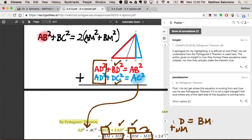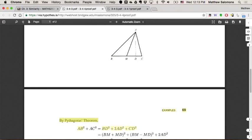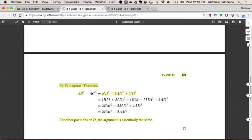Because CD plus DM, because those points are collinear, is CM, and CM is equal to BM precisely because M is the midpoint of the side BC. So that substantiates that substitution. Once that substitution is made, the rest is just algebra to get us to the proof of the Apollonian theorem. Thanks a lot.